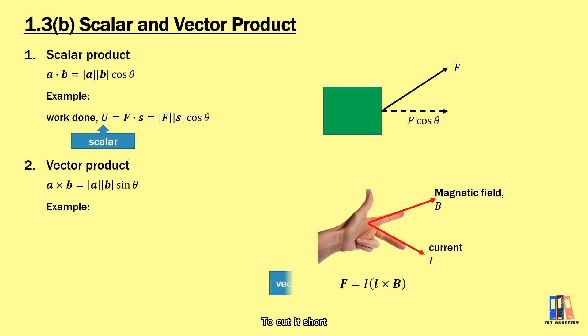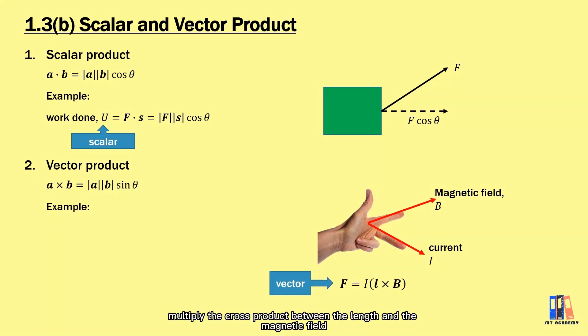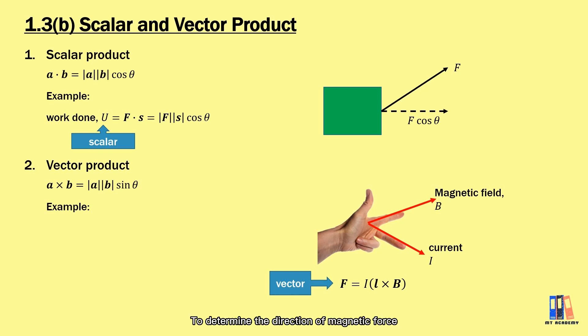To cut it short, the magnetic force is equal to the current multiplied by the cross product between the length and the magnetic field.